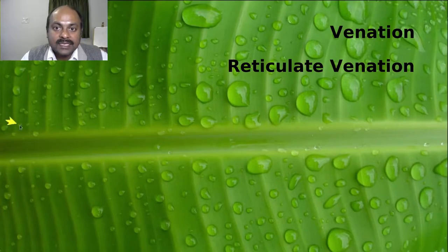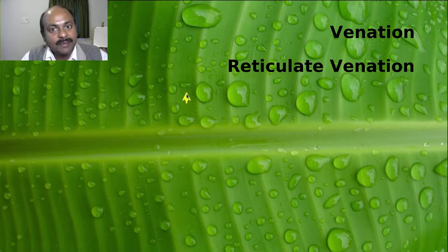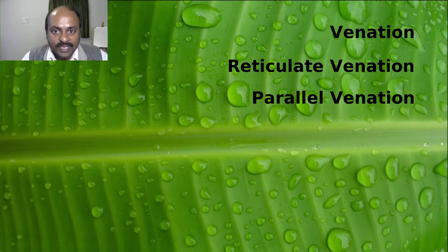In some plants, the veins branching from the midrib run parallel to each other, just like railway tracks — they do not form a network. This type of venation is known as parallel venation. All grasses, bamboo, palms, and the banana plant have parallel venation.